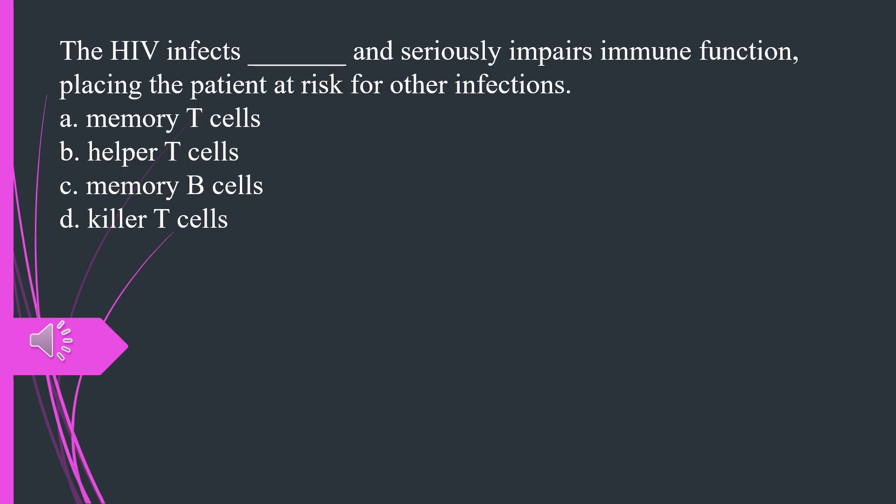The HIV infects what and seriously impairs immune function, placing the patient at risk for other infections. A. Memory T cells B. Helper T cells C. Memory B cells D. Killer T cells. The answer is B, helper T cells.